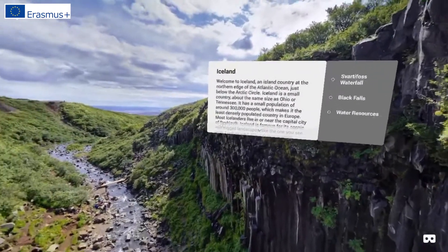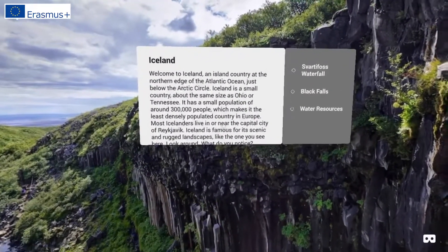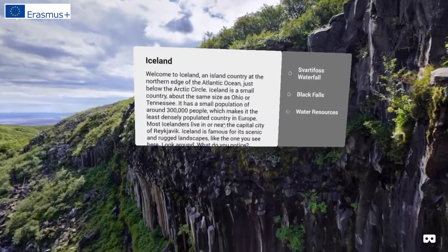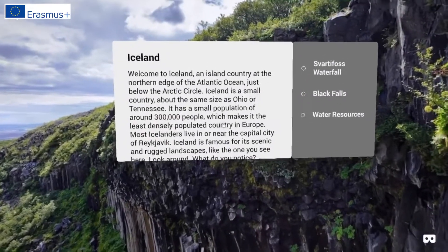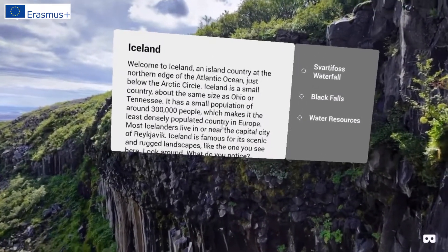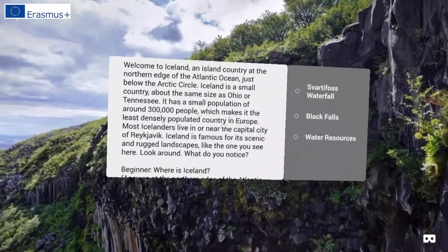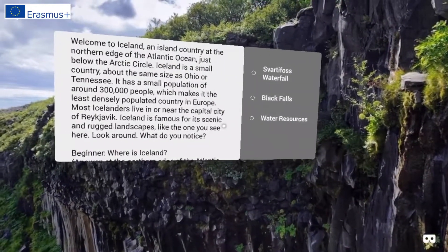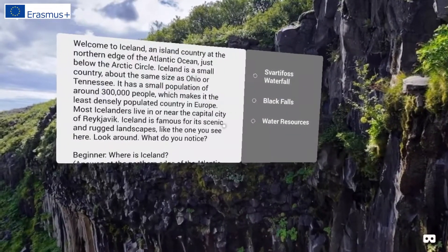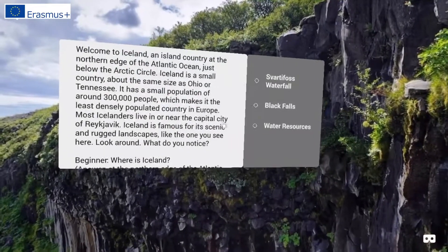Welcome to Iceland, an island country at the northern edge of the Atlantic Ocean just below the Arctic Circle. Iceland is a small country about the same size as Ohio or Tennessee. It has a small population of around 300,000 people, which makes it the least densely populated country in Europe. Most Icelanders live in or near the capital city of Reykjavik. Iceland is famous for its scenic and rugged landscapes like the one you see here. Look around — what do you notice?